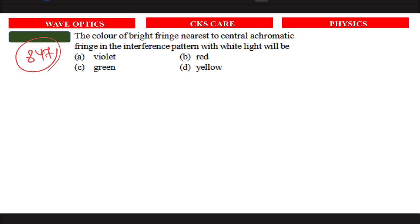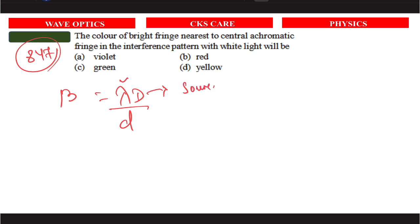The color of the bright fringe nearest to the central achromatic fringe in the interference pattern with white light. In Young's double slit experiment, the fringe width β = λD/d, where λ is the wavelength, D is the source-to-screen distance, and d is the slit separation.